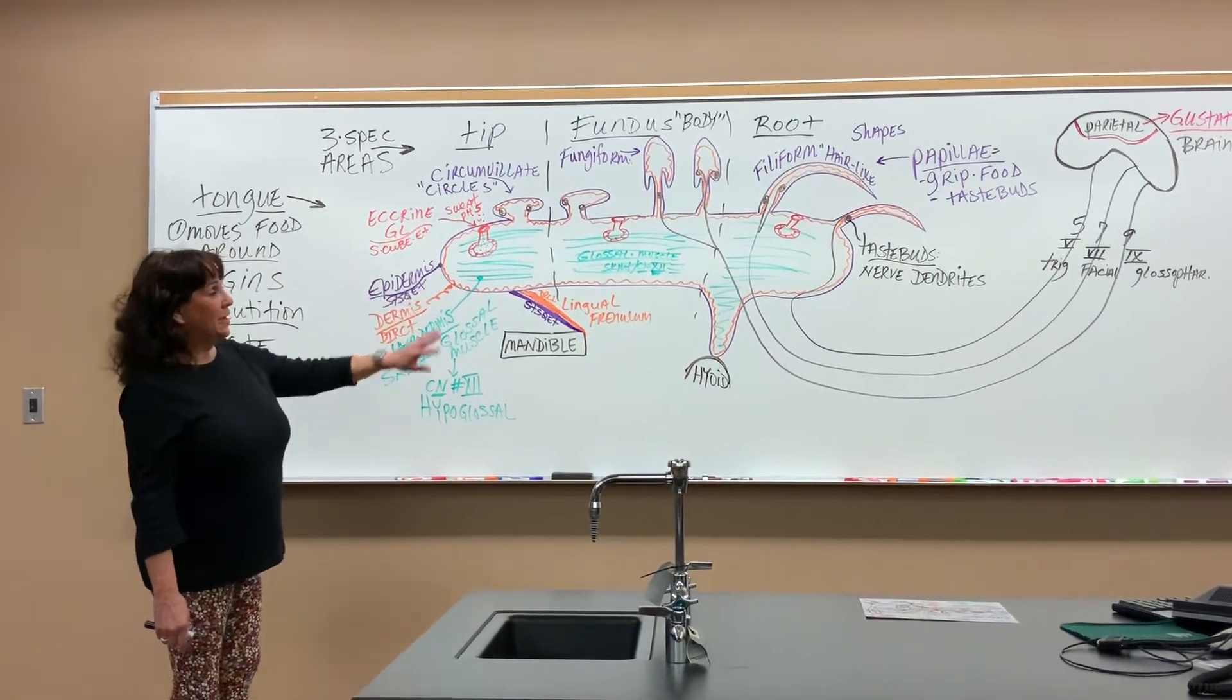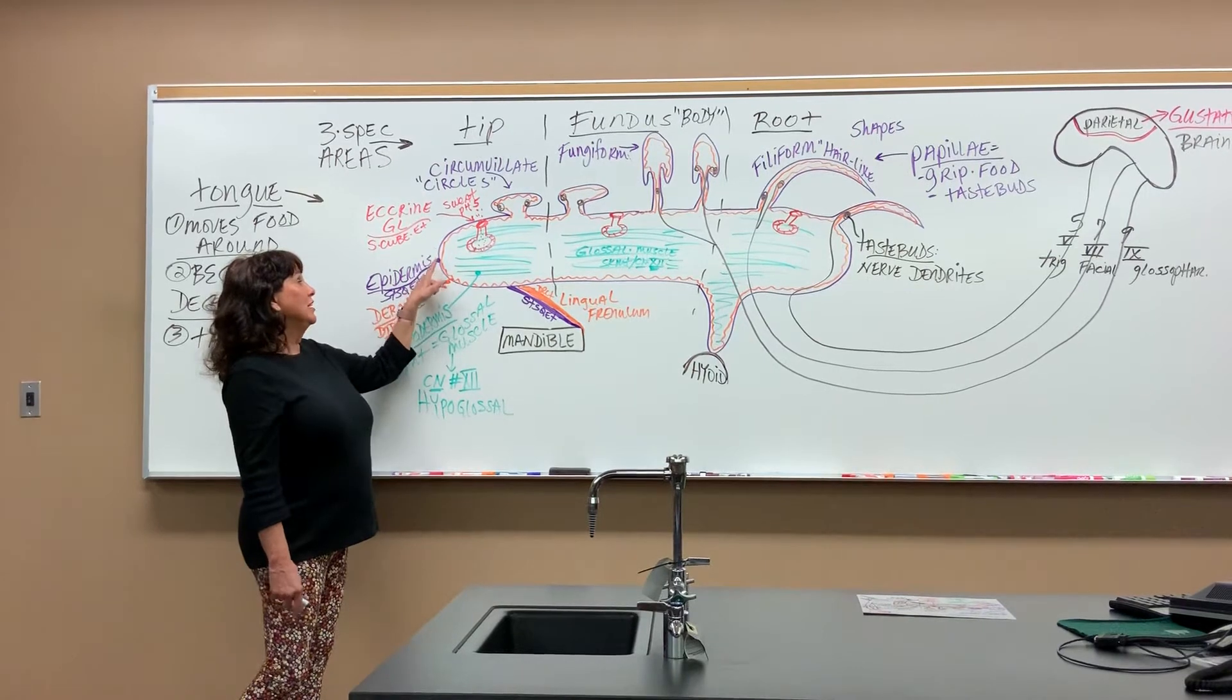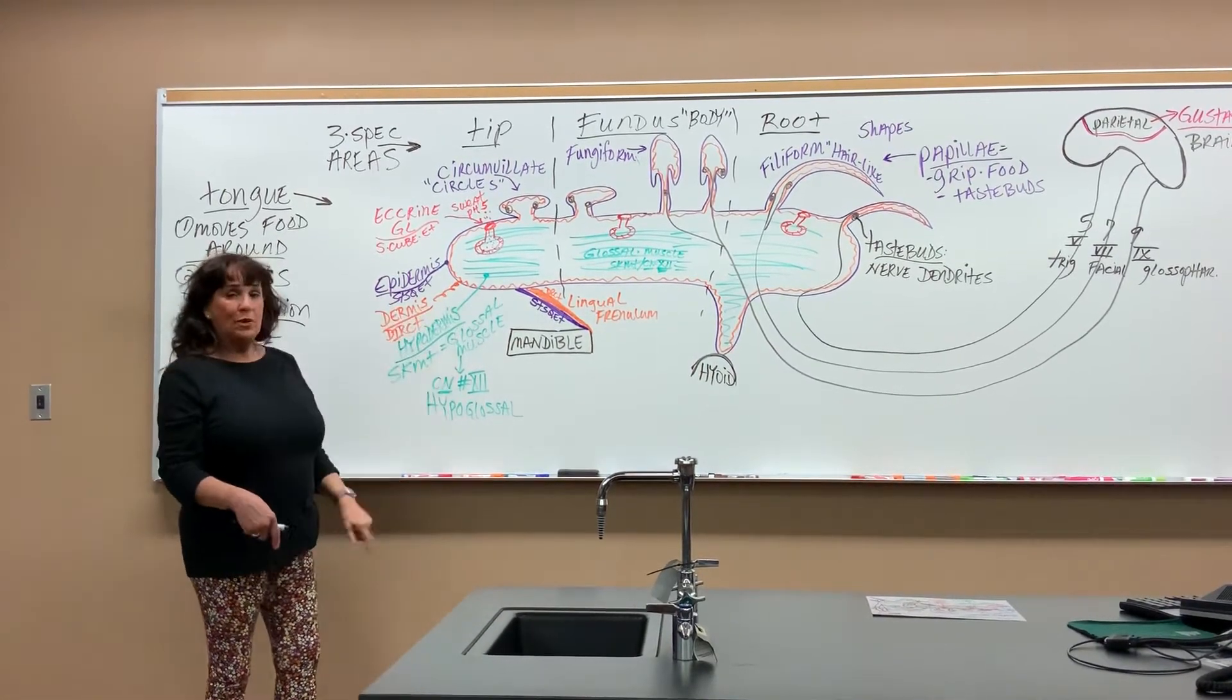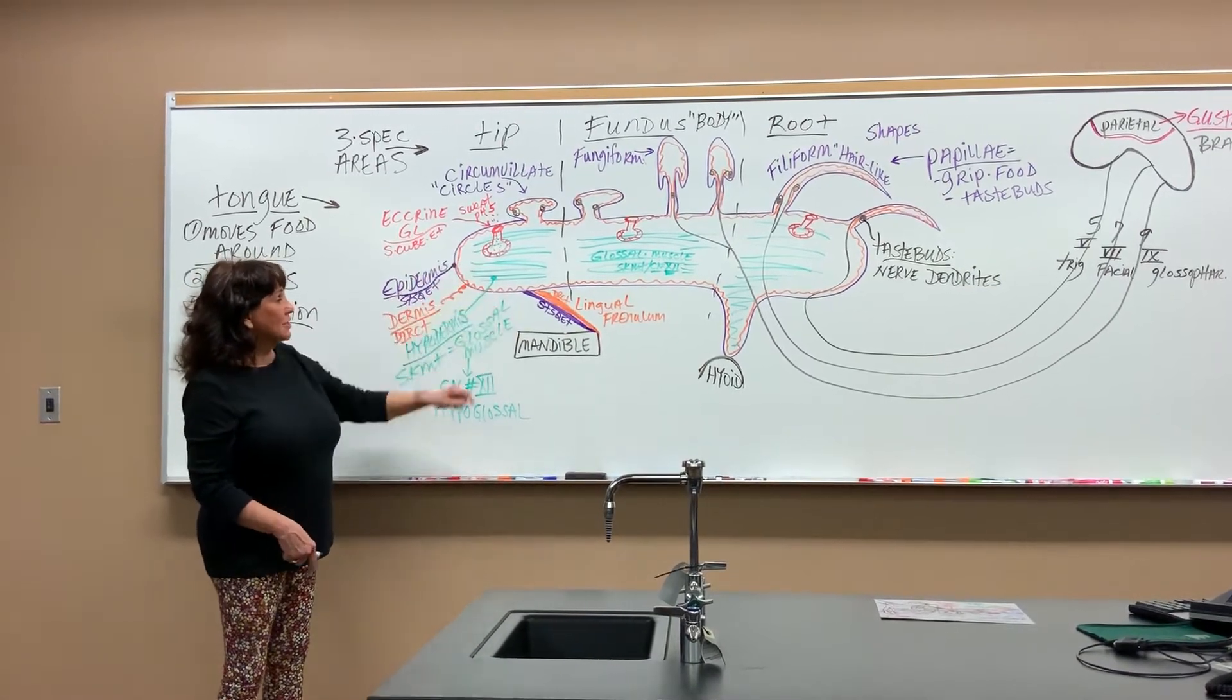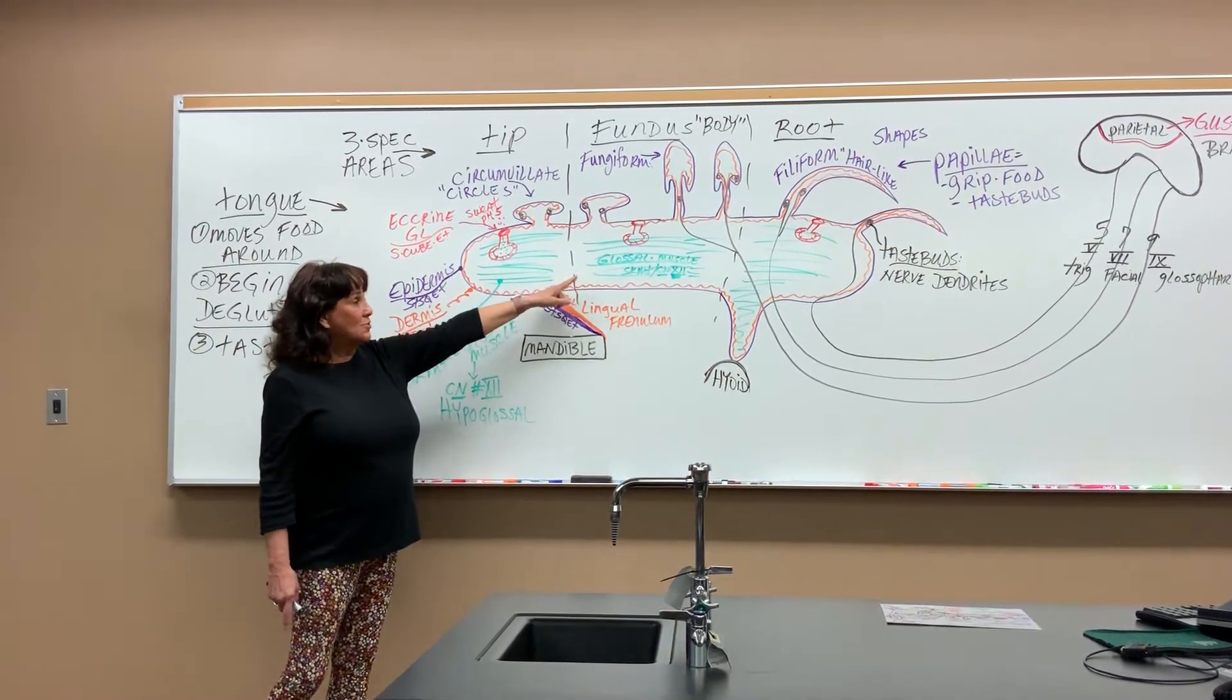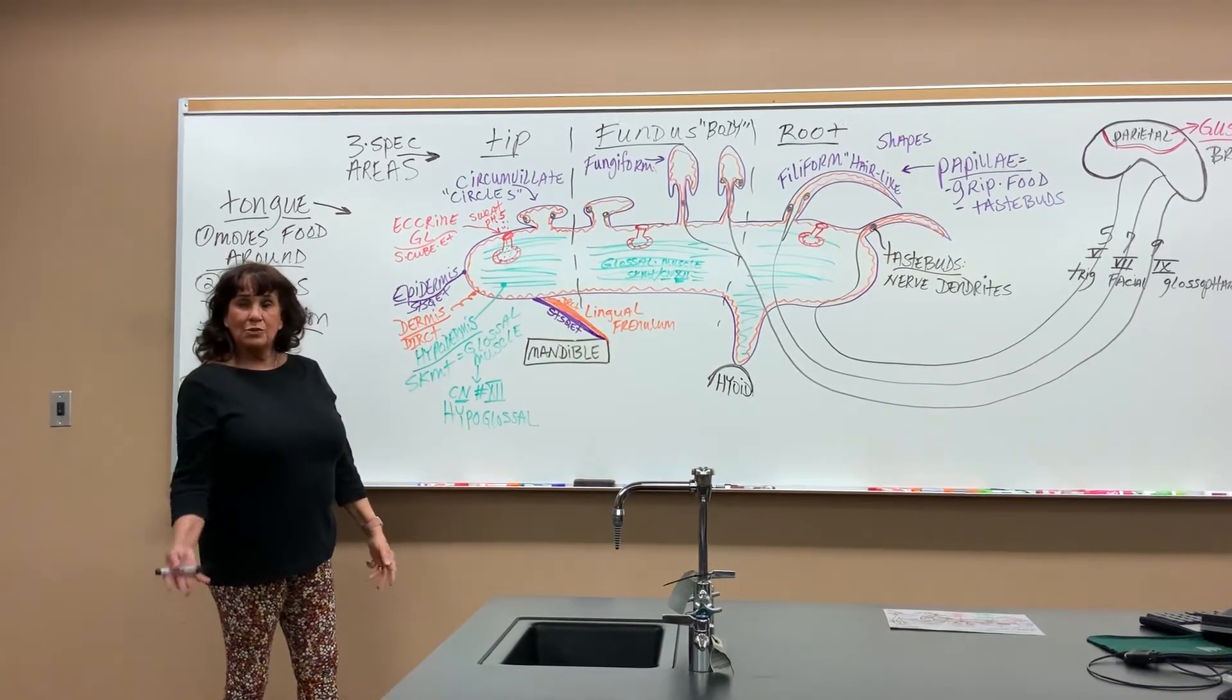Once you get those main areas identified, what is the tongue made of? Essentially, it's covered with skin. The purple on the outside is thin skin, stratified squamous epithelium, your epidermis. Underneath supporting it is dense irregular connective tissue, the orange squiggly line. What's different about the tongue is this big huge area called the glossal muscle, skeletal muscle under voluntary control.